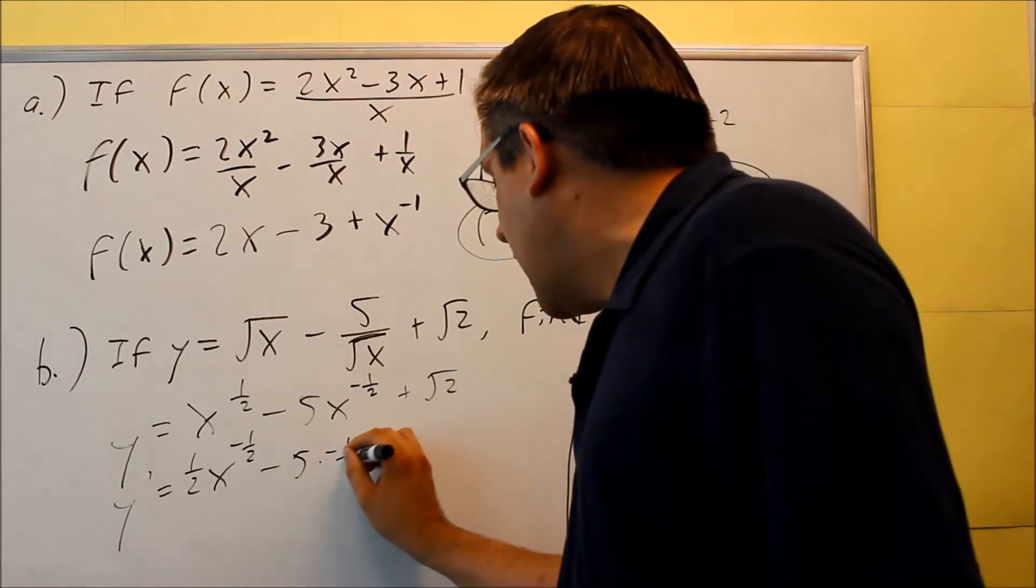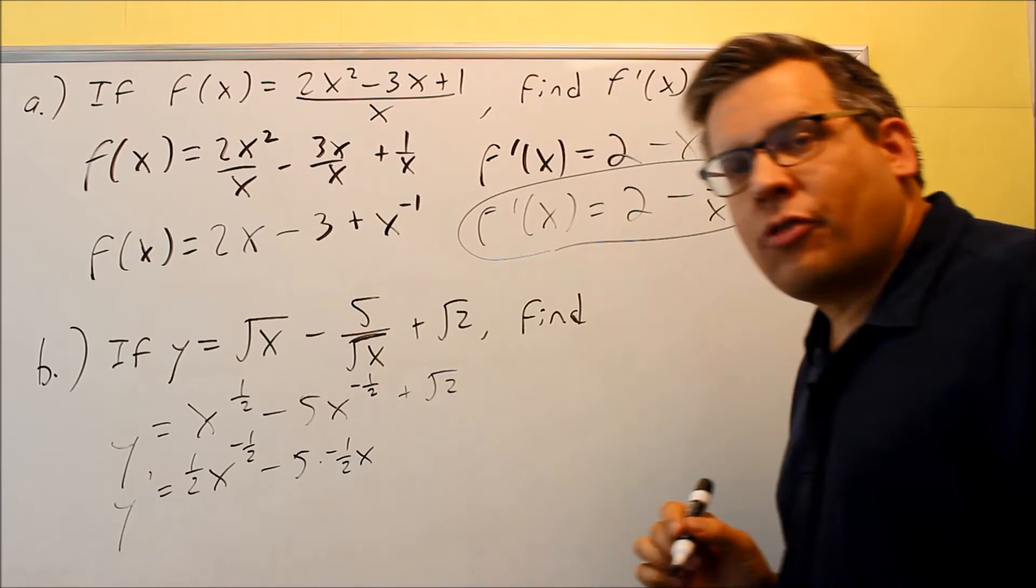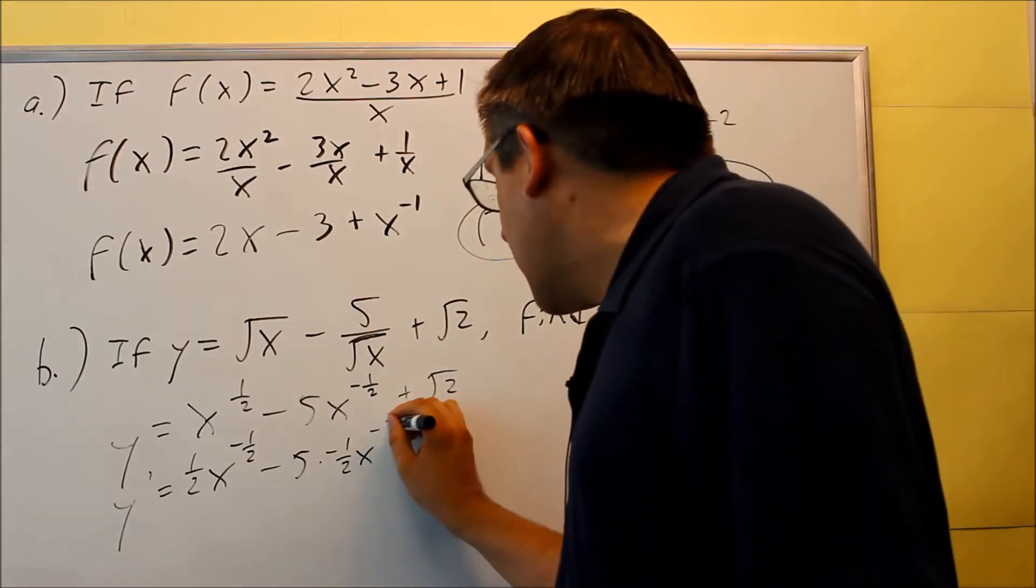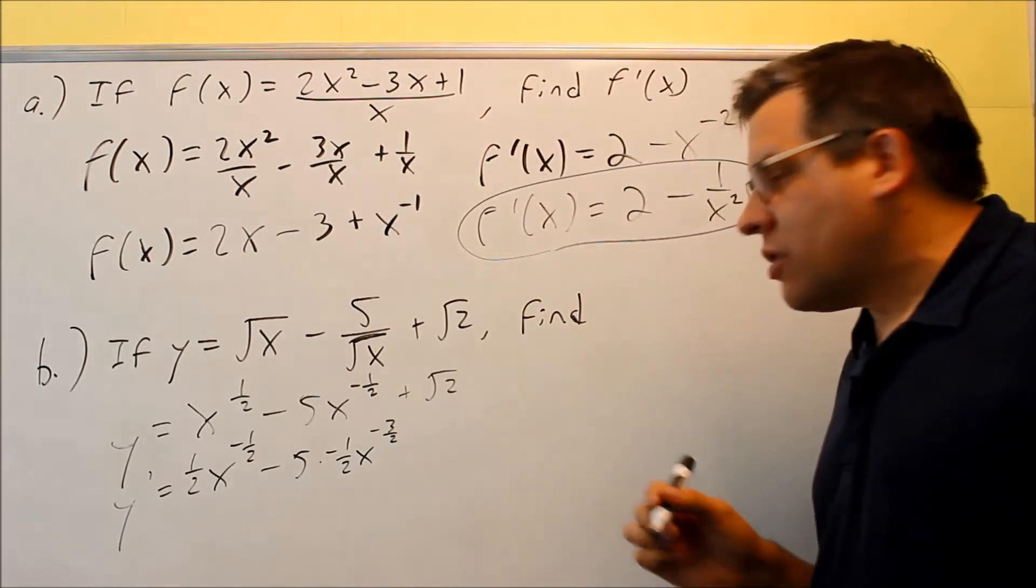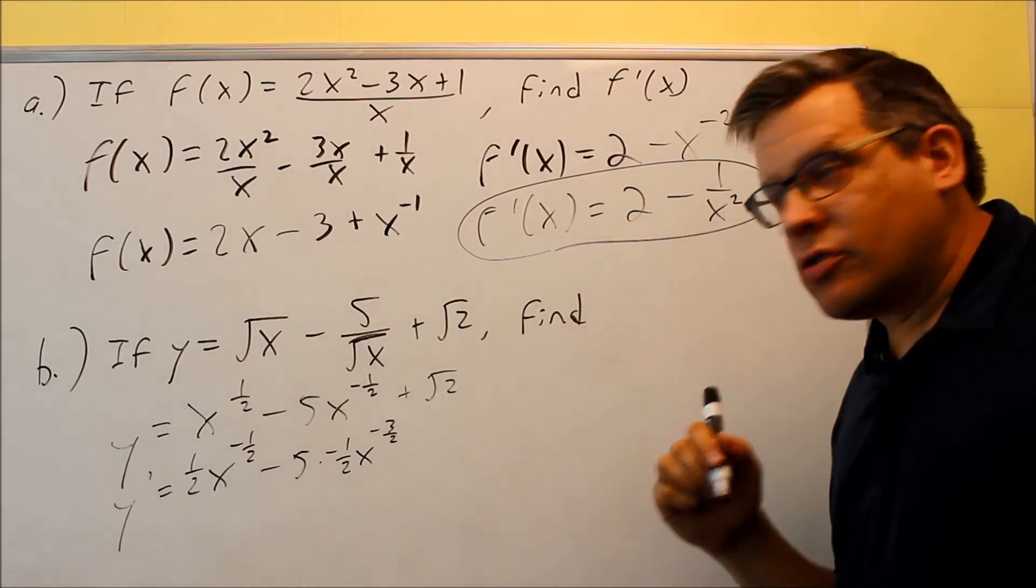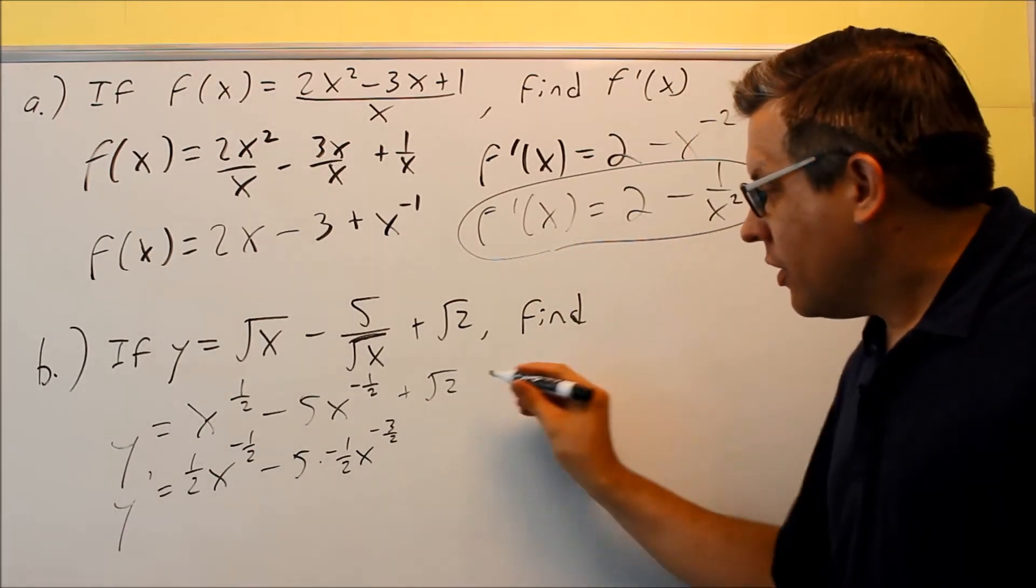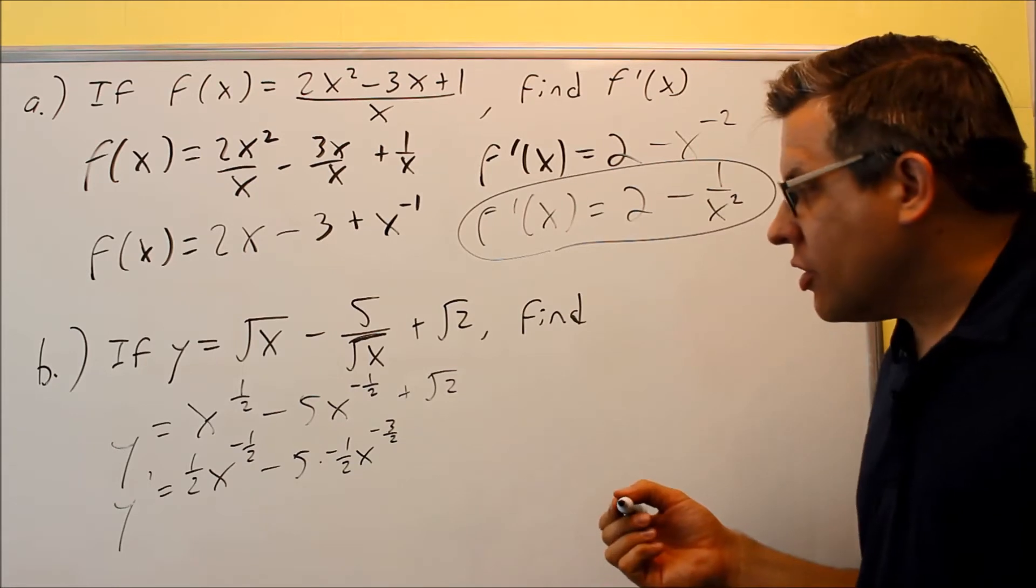To do that one, negative 1 half is going to come down, x. Subtract 1 from the exponent. I get negative 3 halves. That's negative 1 half minus 2 over 2. You'll get minus 3 halves. The derivative of square root of 2 is going to be 0.